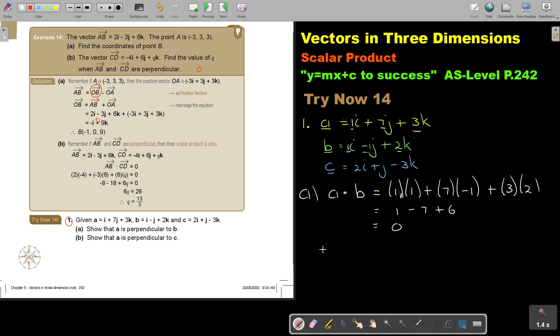So, therefore, if A dot B equals 0, then A and B are perpendicular.